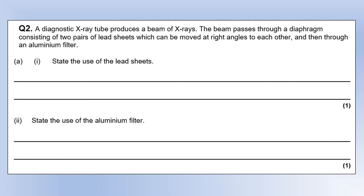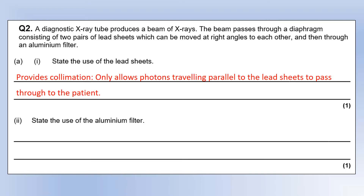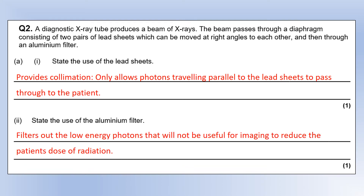Now looking at x-rays from a different perspective: after x-rays leave the tube, they pass through a diaphragm — two pairs of lead sheets movable at right angles to each other — and then through an aluminium filter. The lead sheets provide collimation, allowing only photons traveling parallel to the sheets to pass, producing a fine beam directed exactly where needed. The aluminium filter removes lower-energy photons that aren't useful and would add to the radiation dose.